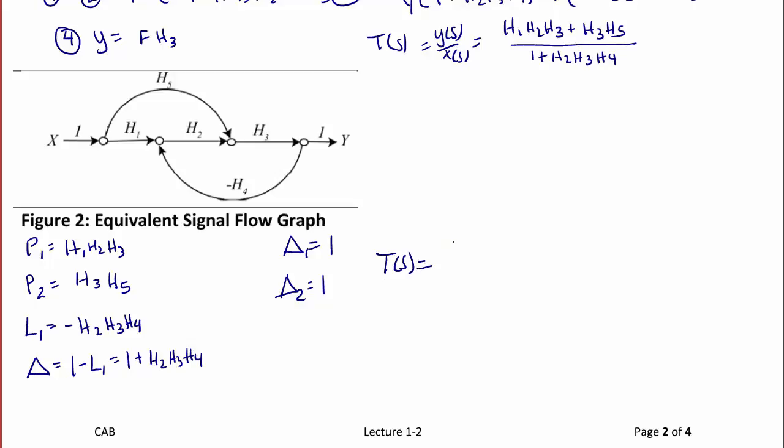So, T is equal to P1Δ1 plus P2Δ2 over Δ, so T is equal to H1H2H3 plus H3H5 over 1 plus H2H3H4. And notice that the signal flow graph and the block diagram represented the same system, so in this case, you get the same transfer function using both methods.